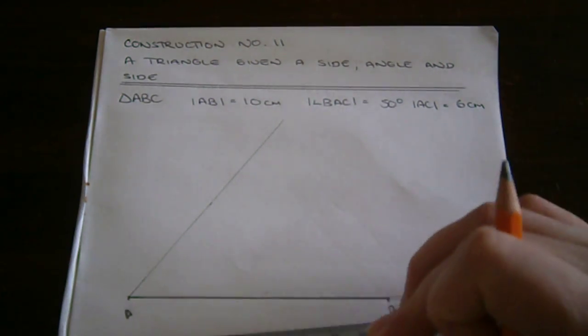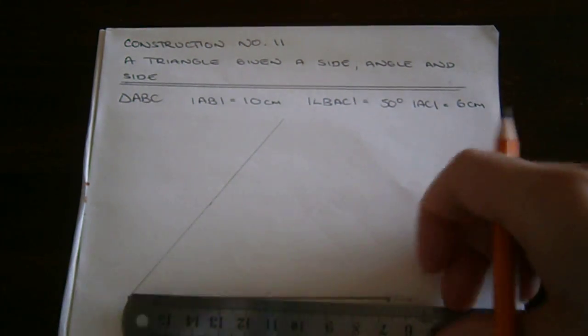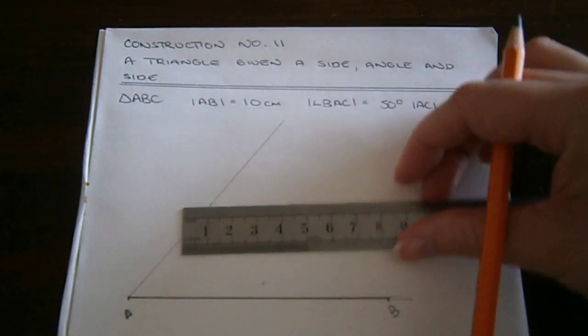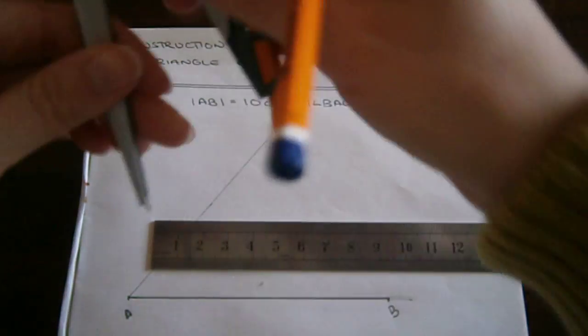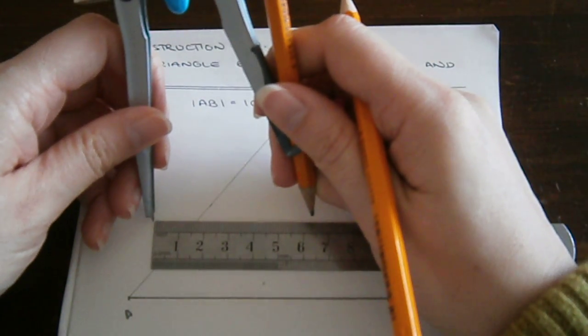A to C is 6 centimeters long, so we need to adjust our compass so that its width is 6 centimeters.